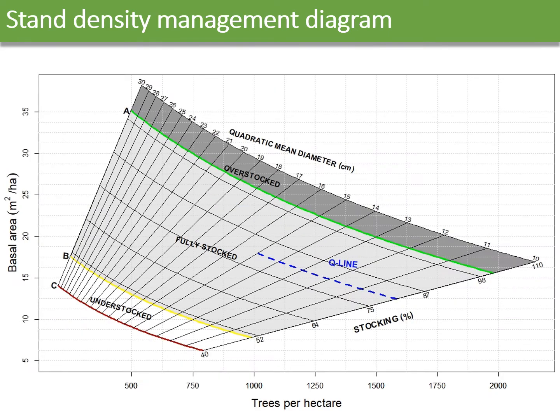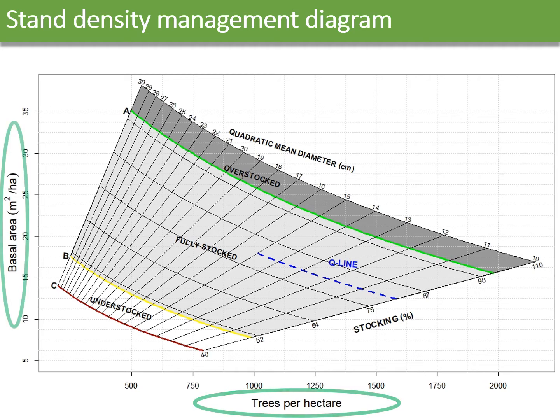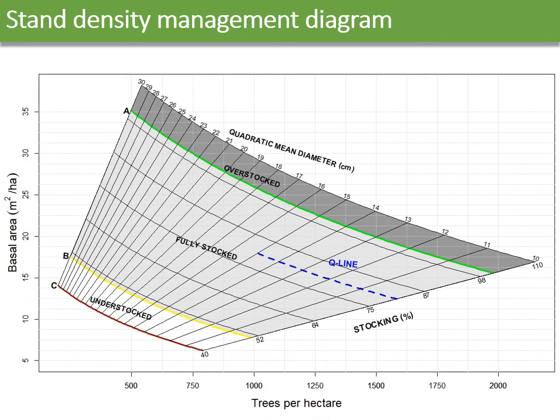The first step is to plot the position of the stand in the graph by using the trees per hectare and the basal area of the stand in question. At this point, diameter growth of crop trees will be minimum. Therefore, this is the right time to thin the stand.